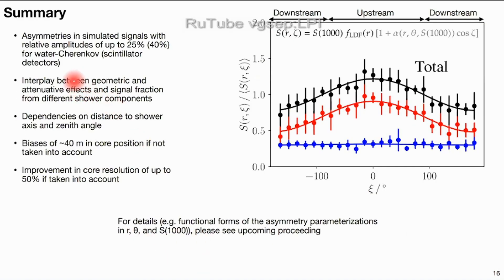In summary: we see asymmetries with amplitudes of up to 25% for water Cherenkov detectors and 40% for scintillators, arising from an interplay of several effects. These induce biases in the reconstructed core position if not properly accounted for, and taking them into account improves core resolution and removes the bias. Full details including functional forms of parameterizations as a function of energy, zenith angle, and distance from the shower axis for both detector types are available in the proceedings associated with this talk. Thank you.